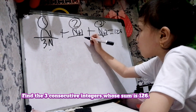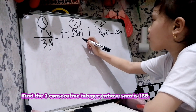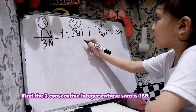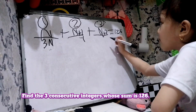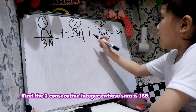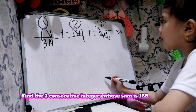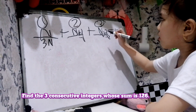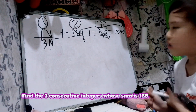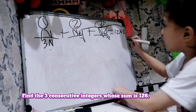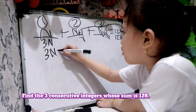Let's eliminate the 1 and 2 by subtracting them from both sides. So you have to subtract both sides by 3. That gives us 126 minus 3 equals 123. So 3N equals 123.